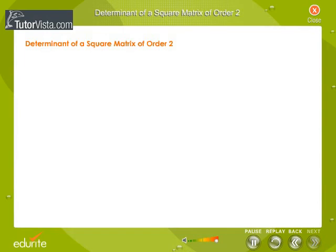Determinant of a Square Matrix of Order 2. Let matrix A equal to A11, A12, A21, and A22.